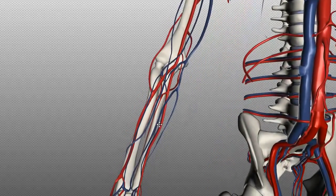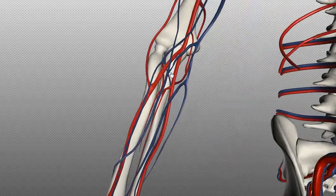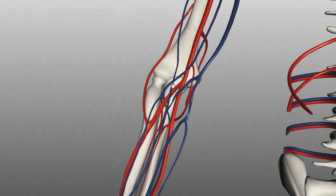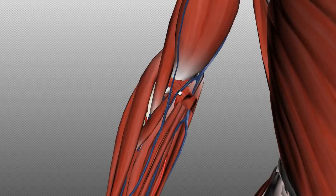Working down the limb, you can see this vein which joins the cephalic and basilic veins — this is the median cubital vein. It links up the cephalic and the basilic vein. With the muscular system shown, you can see this is a superficial vein connecting the superficial cephalic and superficial basilic veins. When taking blood from a patient, these are often the veins used: the cephalic vein, the median cubital vein, and the basilic vein.